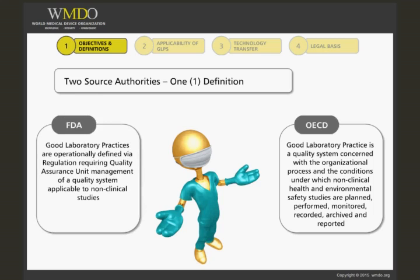FDA operationally defines good laboratory practices via regulation requiring quality assurance unit management of a quality system applicable to non-clinical studies. The FDA's GLP regulation, unlike the OECD handbook, does not list a conventional definition for GLP. As you will see throughout this presentation, these are the two primary sources for defining good laboratory practice.